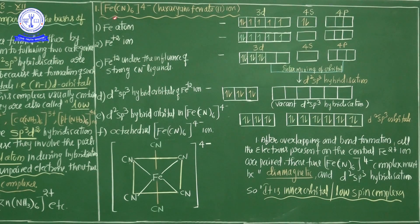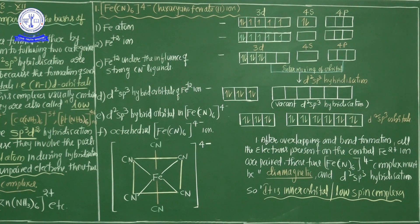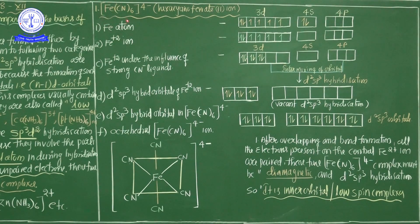In Fe²⁺, since 2 electrons are eliminated from 4s, the configuration becomes 3d⁶ with no 4s electrons. In Fe²⁺ there are only 4 vacant orbitals, but 6 ligands are approaching requiring 6 vacant orbitals. Therefore, the iron atom must be involved in hybridization.